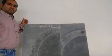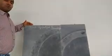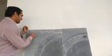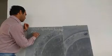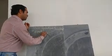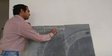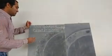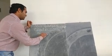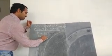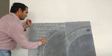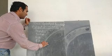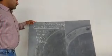Good morning guys. Today we will discuss about Unit 2: Output Primitives. Output Primitives include some geometries. The geometries are Point, Line, Circle, and Ellipse. These are the few entities we are going to discuss under Output Primitives.